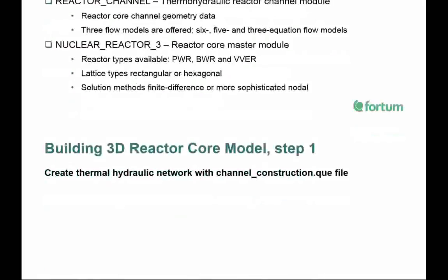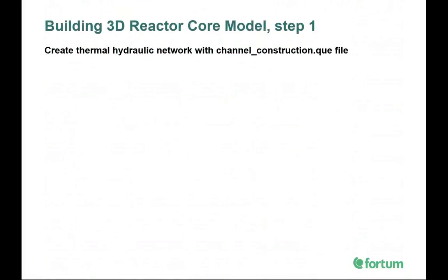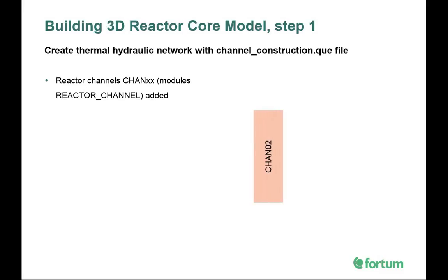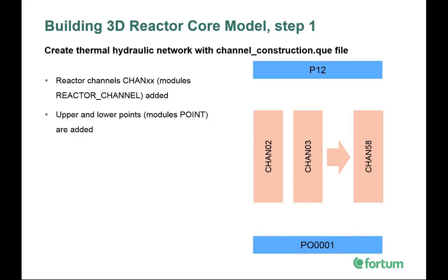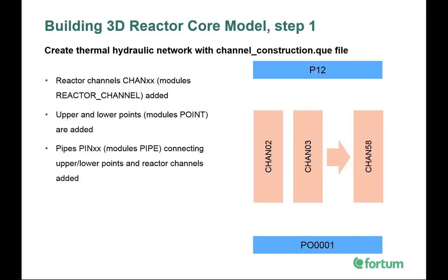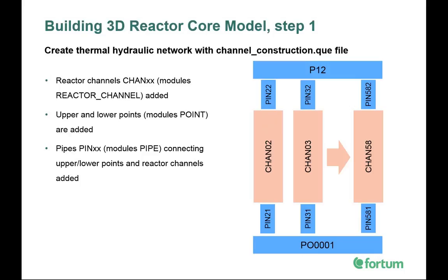In the example 3D reactor core model you'll find the channel construction Q-file, which is part of the 3D reactor core input deck and creates the thermohydraulic network. When this file is executed, APROS will add reactor channels — named 'chan' plus a number in the example. Upper and lower points are added to form boundary conditions. Pipes are then added: one set connecting the lower point to each reactor channel inlet, and another set connecting each reactor channel outlet to the upper point.